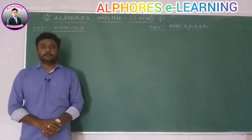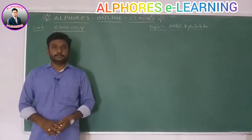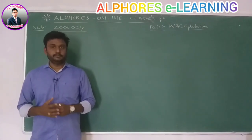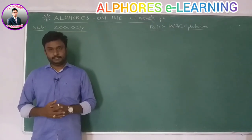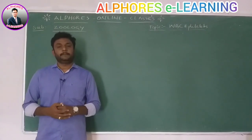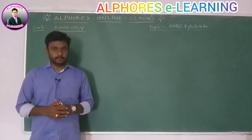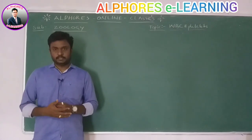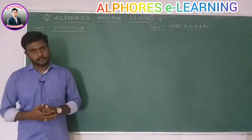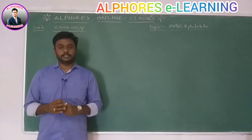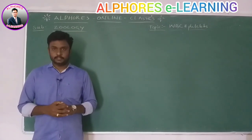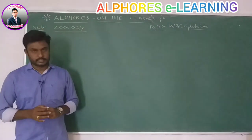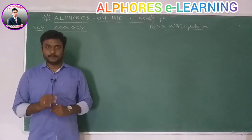Good morning students, welcome to all four's e-learning classes. We are discussing about the fluid connective tissues. In the previous classes, we completed blood as a fluid connective tissue. Blood consists of plasma and formed elements. Blood is a fluid connective tissue which is flowing in the cardiovascular system.